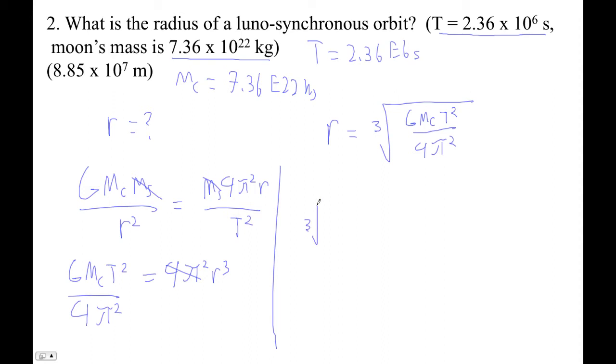So you go cube root of 6.67 e minus 11, and then that's times 7.36 e22, which apparently also is the mass of the moon, times 2.36 e6, and you want to raise that, you want to square that.